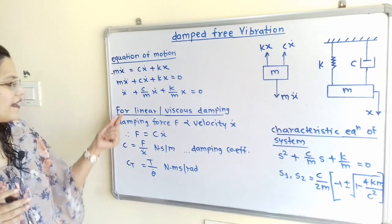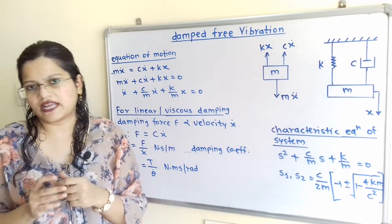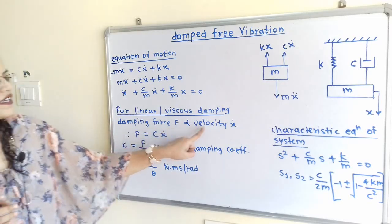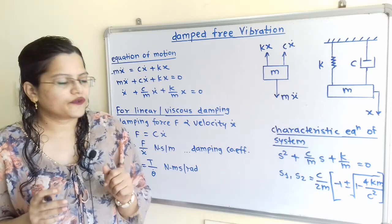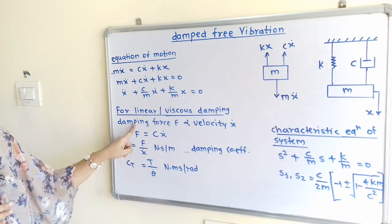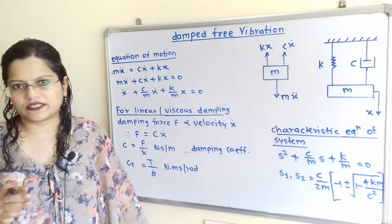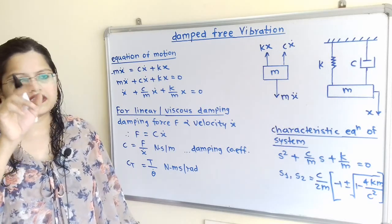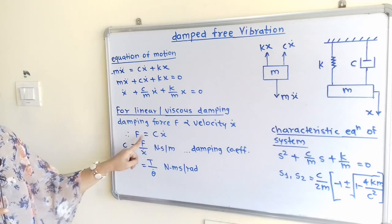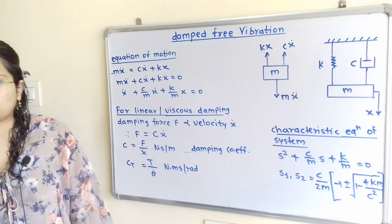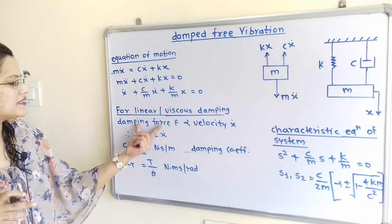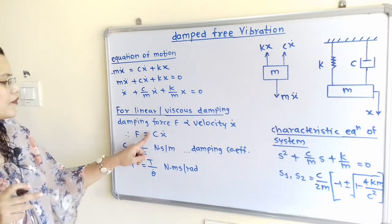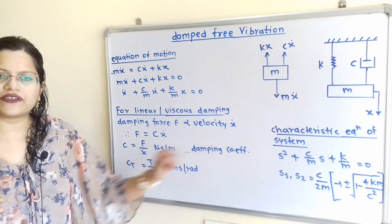Now we understand linear or viscous damping. When the damping force F is directly proportional to velocity X dot, we write F ∝ X dot, so F equals C into X dot. This type of damping is known as linear or viscous damping, and C is used as the damping coefficient.